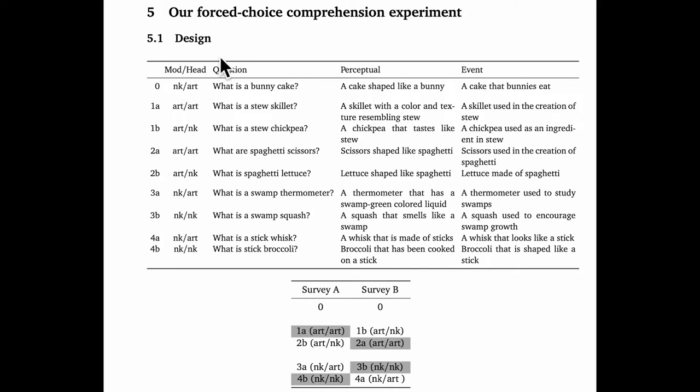In section 5.1 here, I've given all the materials from this little experiment. As you know, there were two surveys to support a cross-design that closely resembles the one that Levine et al. used. Both surveys had item zero. It was a kind of warm-up item. I was just curious about what responses people would give to the compound bunny cake, and it also seemed smart to start with an item that wasn't too central to our core experimental manipulations.